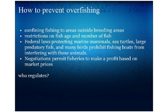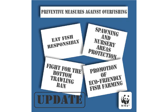How to prevent overfishing: confine fishing to areas outside breeding areas; restrictions on fish age and number of fish caught; federal laws protecting marine mammals, sea turtles, large predatory fish, and many birds, prohibiting fishing boats from interfering with these animals; negotiated permits for fisheries to make a profit based on market price. Other preventive measures: eat fish responsibly; protect spawning and nursery areas; promote eco-friendly fish farming; and fight for a bottom trawling ban, so we don't get large bycatch with other animals caught in nets and thrown back dead.